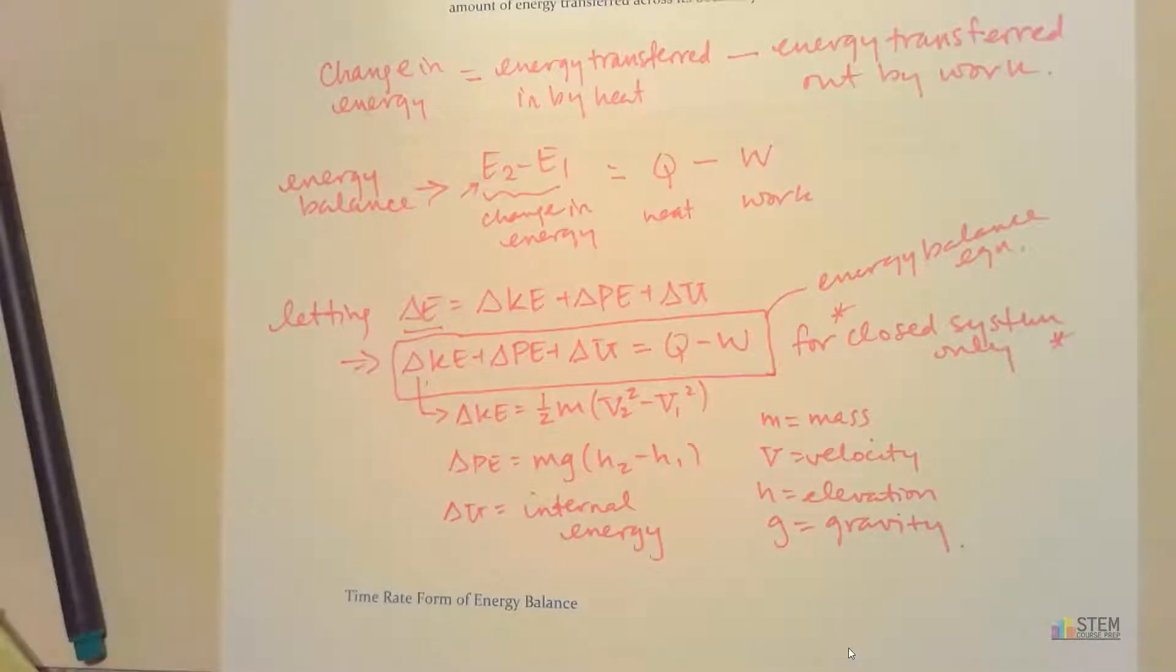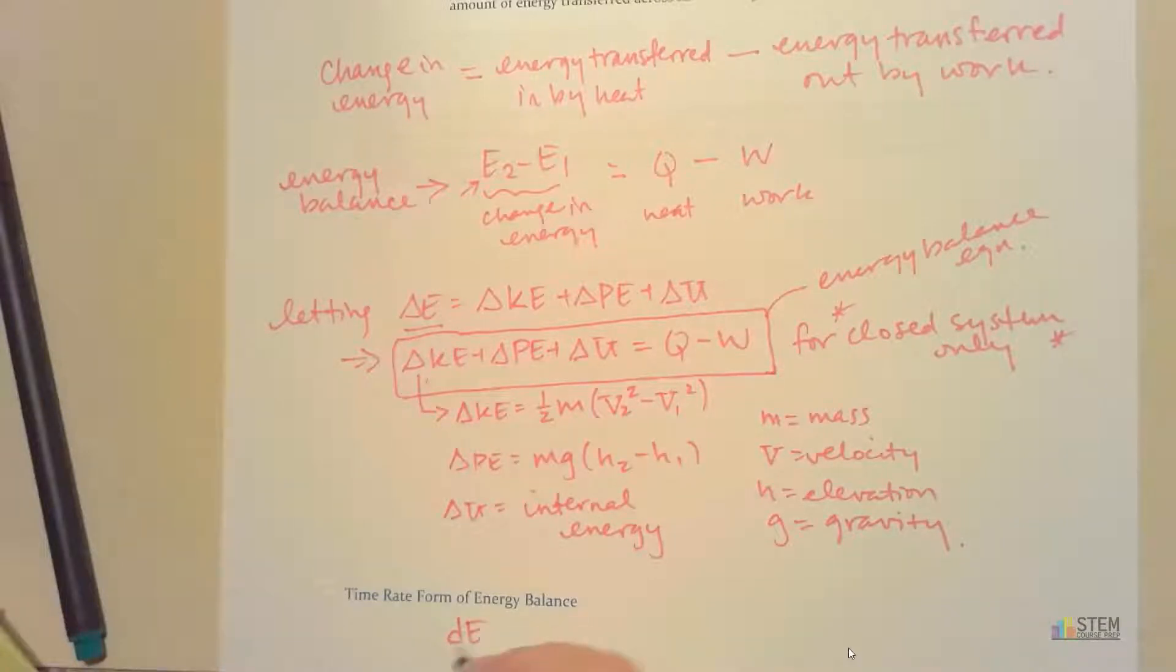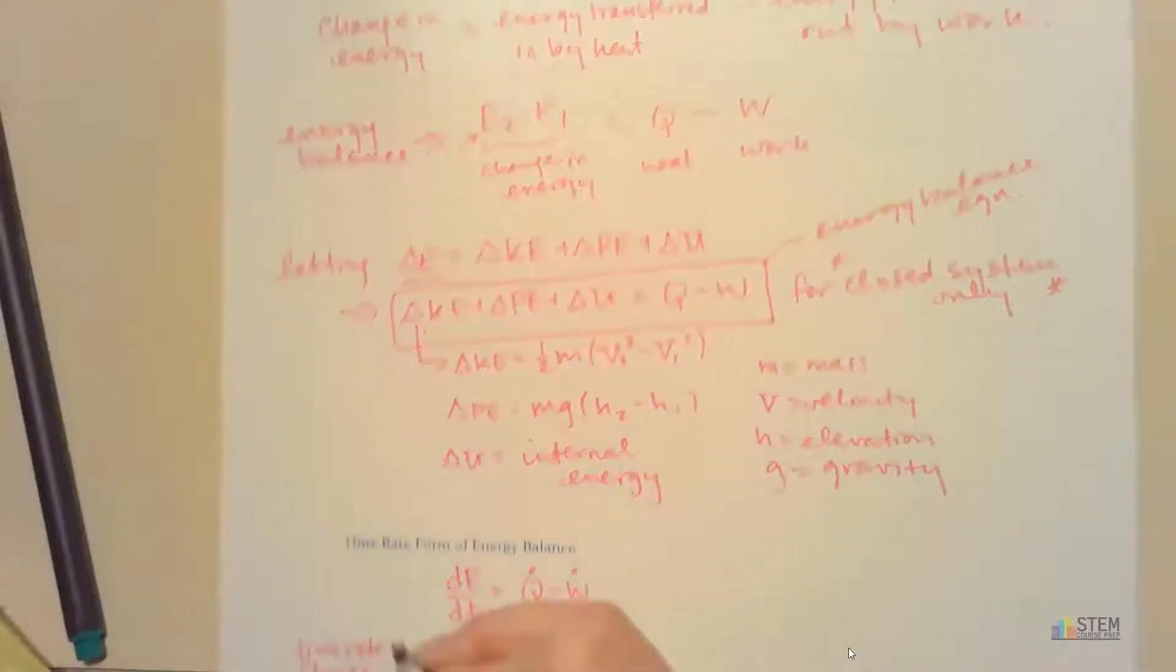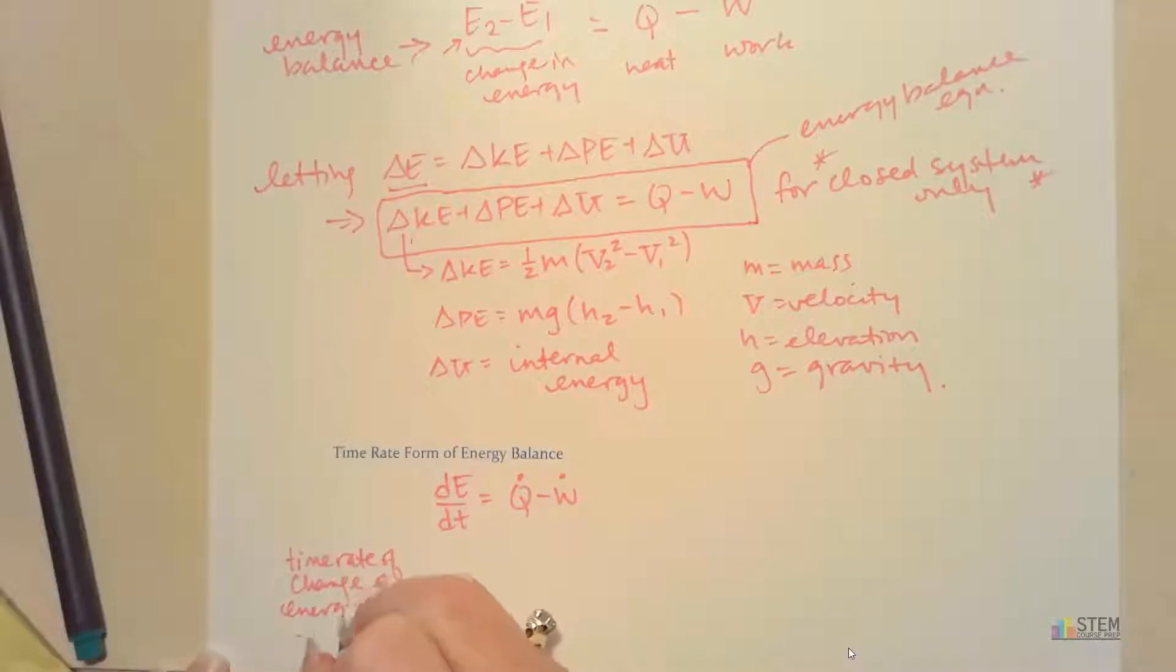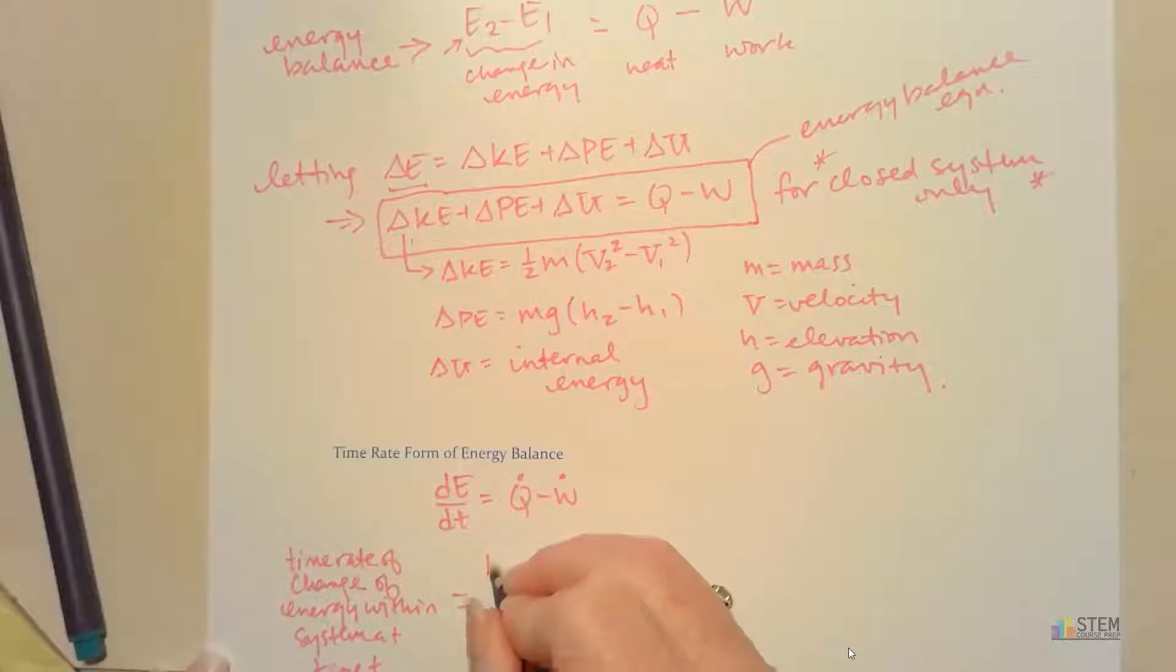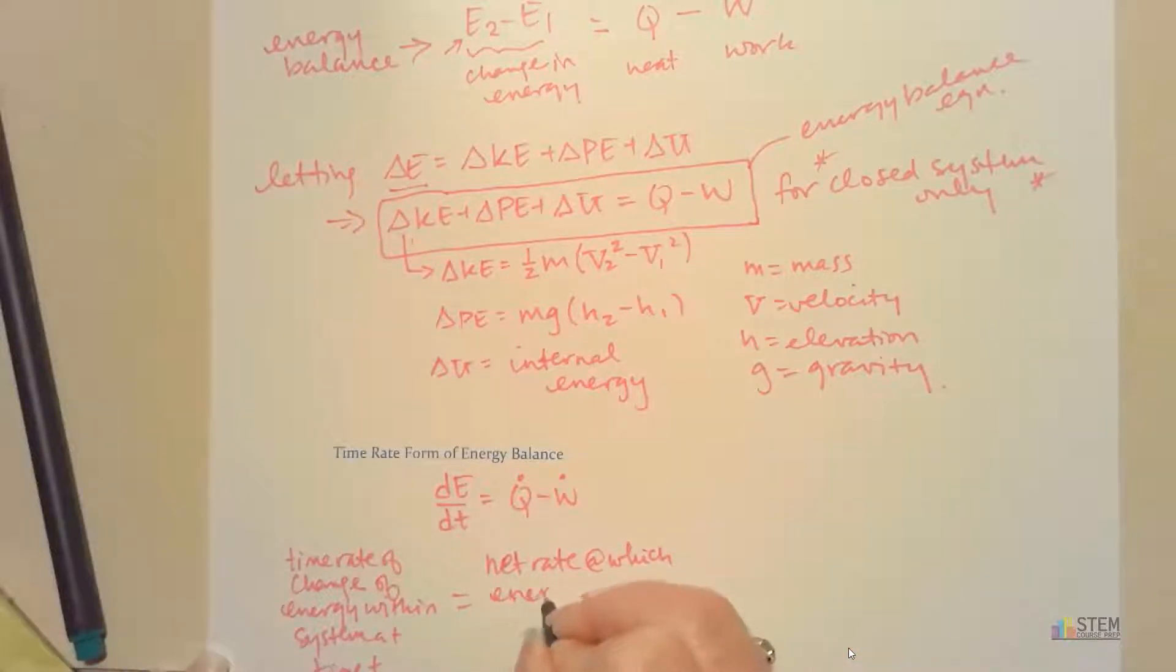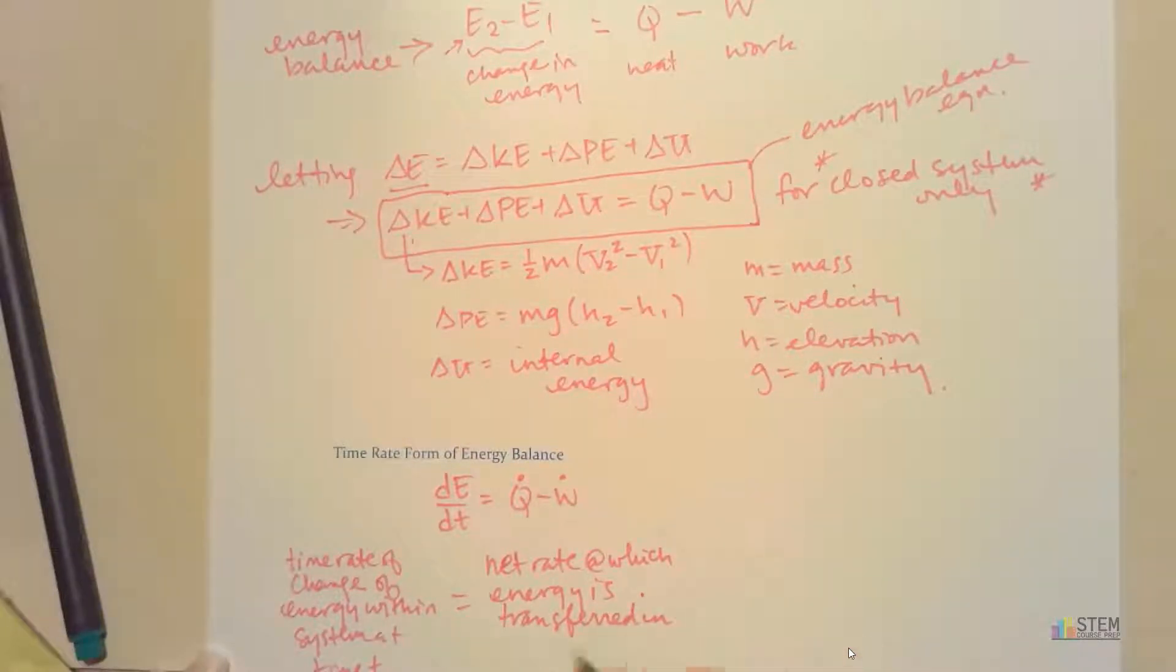There's a time rate form of energy balance. Let's write down what that is. So this is where we have DE over DT. So the time rate of change of energy, that's going to equal Q dot minus W dot. And then if we write it in words, what that means is the time rate of change of energy within the system at time T.